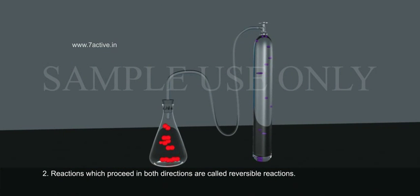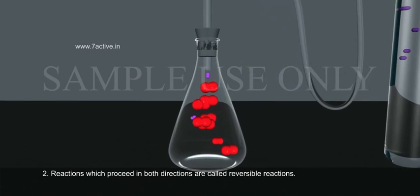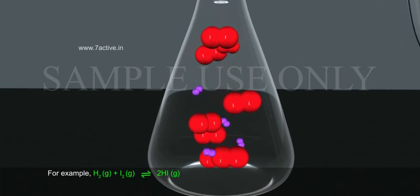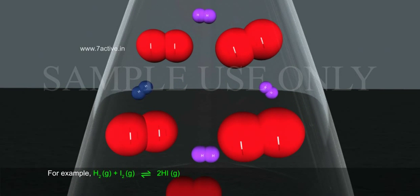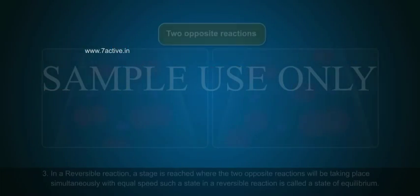Reactions which proceed in both directions are called reversible reactions. For example, H2 gas plus I2 gas gives 2HI gas.